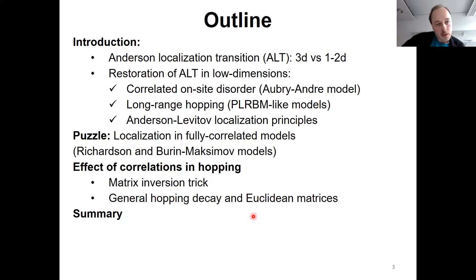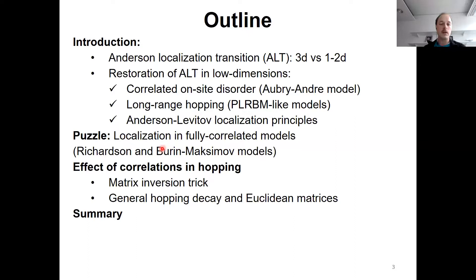What will we be talking about? First, let me briefly remind you what Anderson localization is — why there is a transition in 3D but only full localization at any finite disorder in 1D and 2D systems, and how to restore the Anderson localization transition in low-dimensional systems. At the end of the introduction I'll explain how to estimate the transition using resonance counting. The main question in the central part is whether it's possible to have localization beyond the locator expansion, with several examples. At the end I explain this analytically and show what we see numerically.